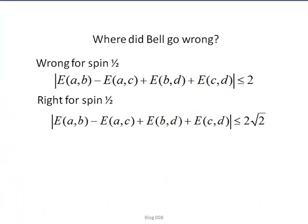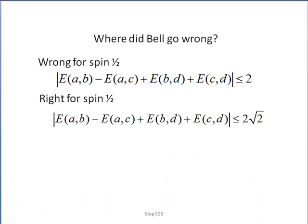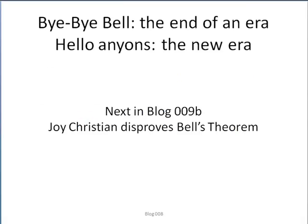But where did Bell go wrong? The results of Gerd are consistent with those of Joy Christian at Oxford and my local hidden variable model. So we turn to that work now. In my next entry, 009b, we will find the reason for Bell's error, and Christian's elegant way to correctly account for the elements of physical reality that Bell missed.